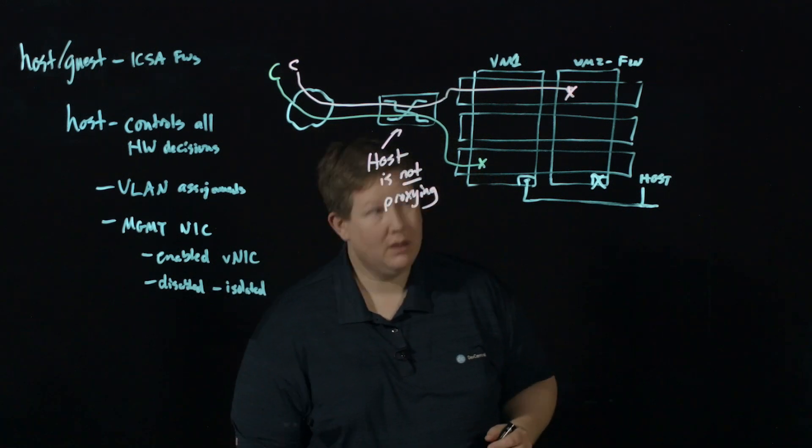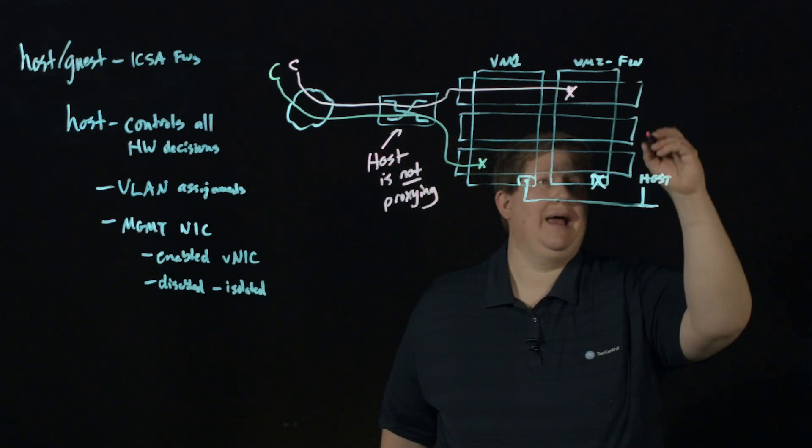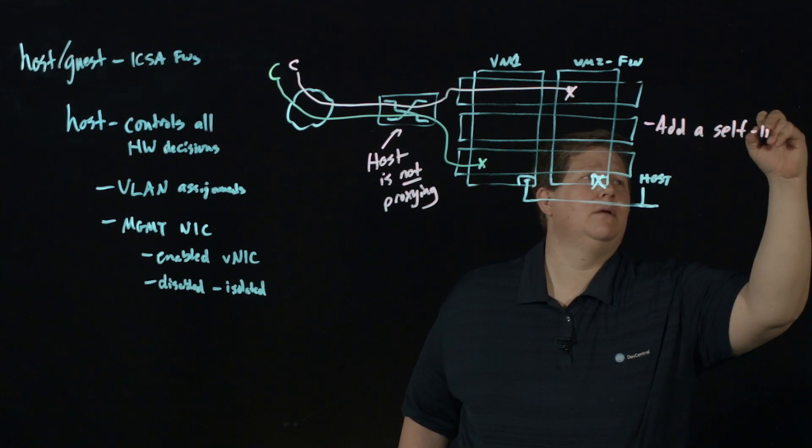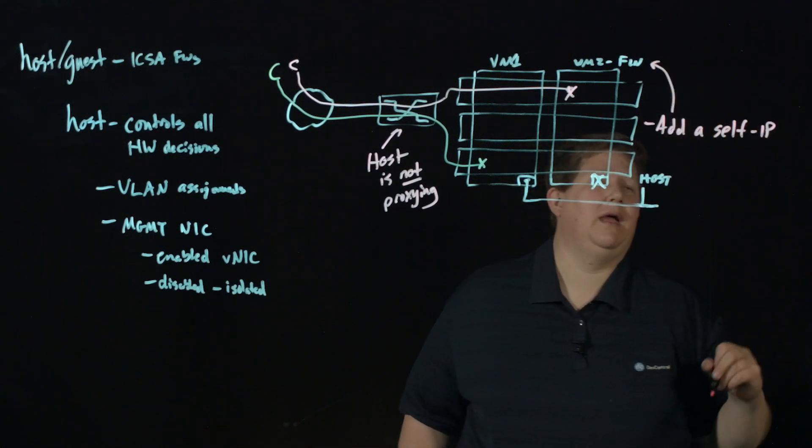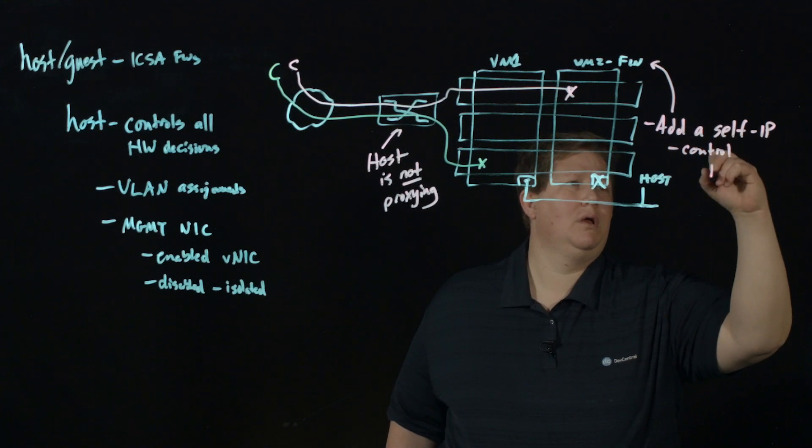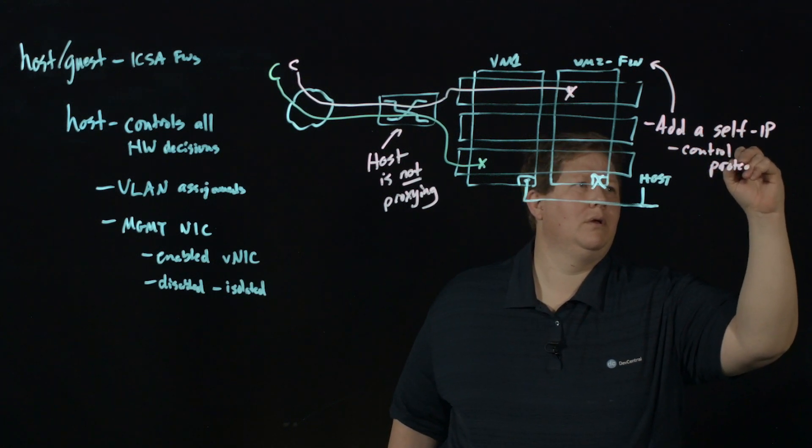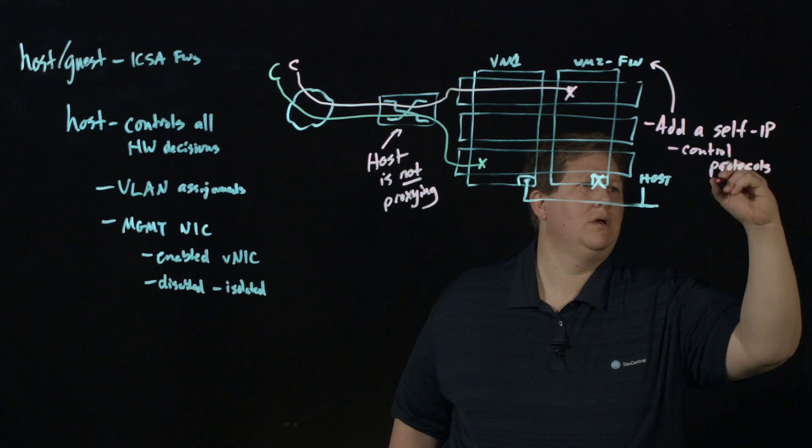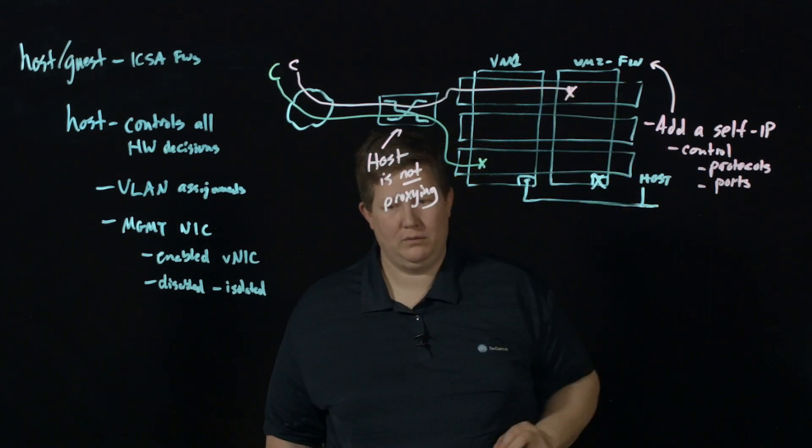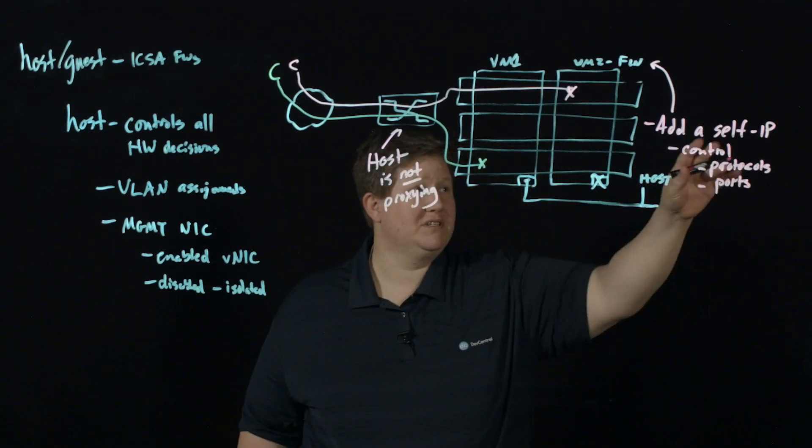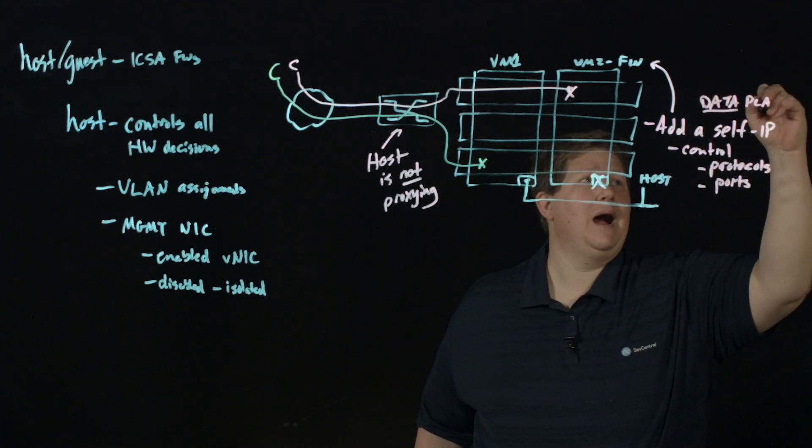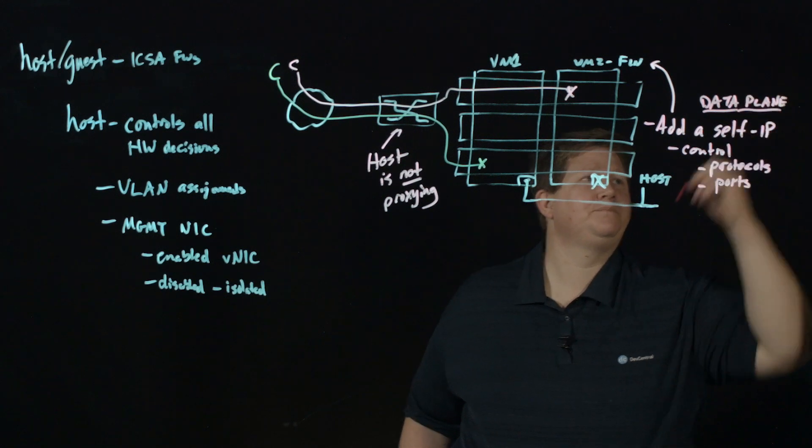Well, that's where in say in this, you add a self-IP to this guy. And then you can control your protocols and ports at the self-IP level for how management traffic gets to that. But that is happening on the data plane, not the control plane.